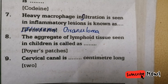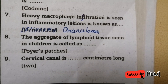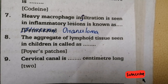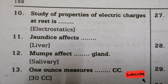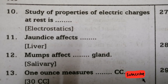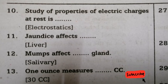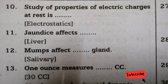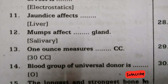Subscribe to our channel and click on the bell icon and select all notifications. We have a lot of nursing-related content in our channel. Tenth question: the study of properties of electric charges — answer is electrostatics. Eleventh question: jaundice affects which part of the body? Right answer is liver.